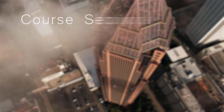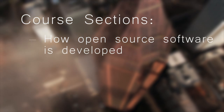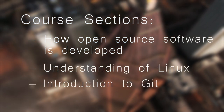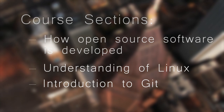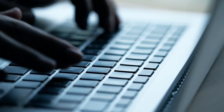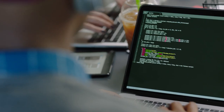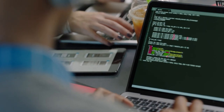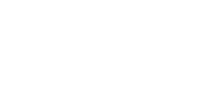The three sections of this course provide details on how open source software is developed, an understanding of what Linux is and how it works, and a thorough introduction to Git — the source control system that enables widely distributed software development to operate efficiently. Enroll today and improve your open source development skills.